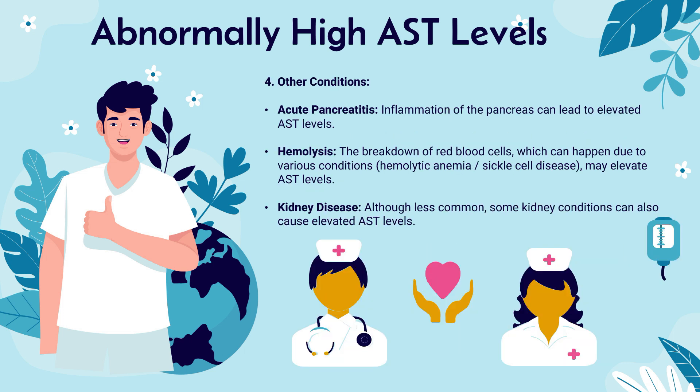There are even more causes of abnormally high AST levels, including other conditions such as acute pancreatitis, hemolysis, and kidney disease. In acute pancreatitis, inflammation of the pancreas can lead to elevated AST levels. In hemolysis, the breakdown of red blood cells — which can happen due to conditions like hemolytic anemia or sickle cell disease — may also elevate blood AST levels. And in kidney disease, although less common, some kidney conditions can also cause elevated AST levels.